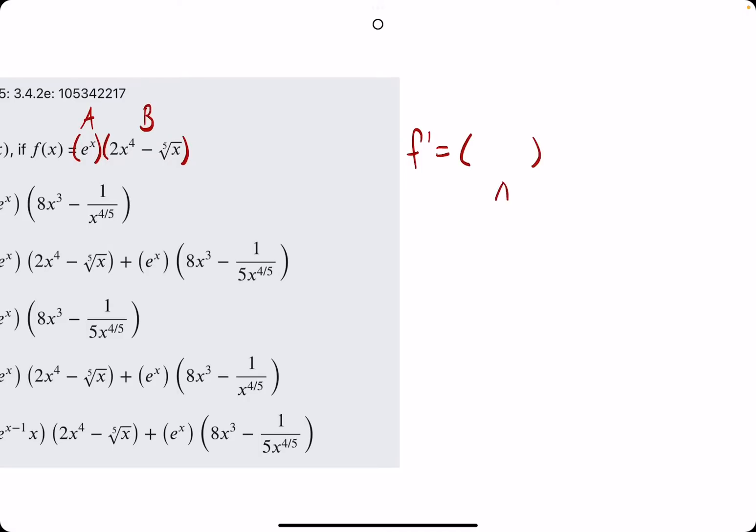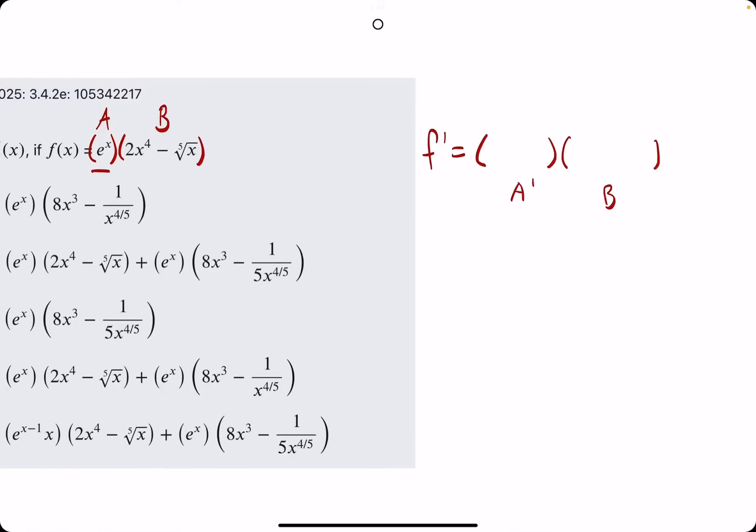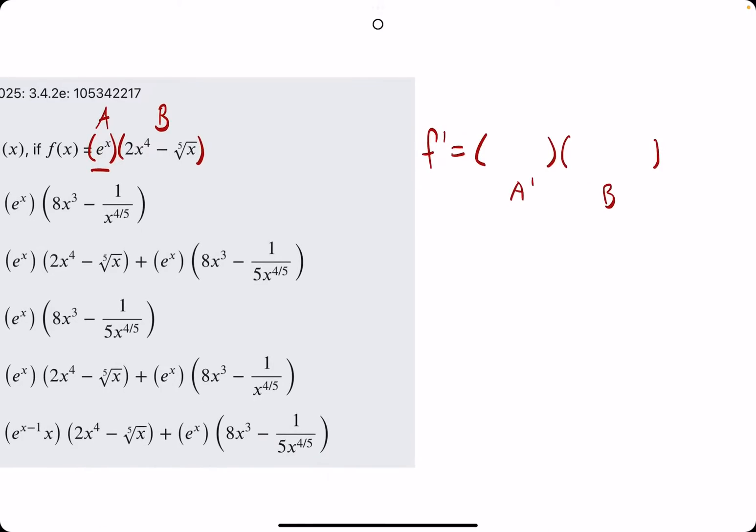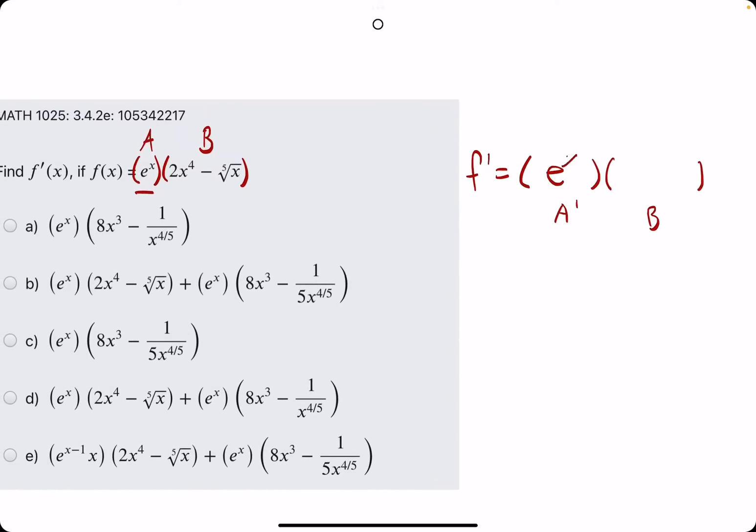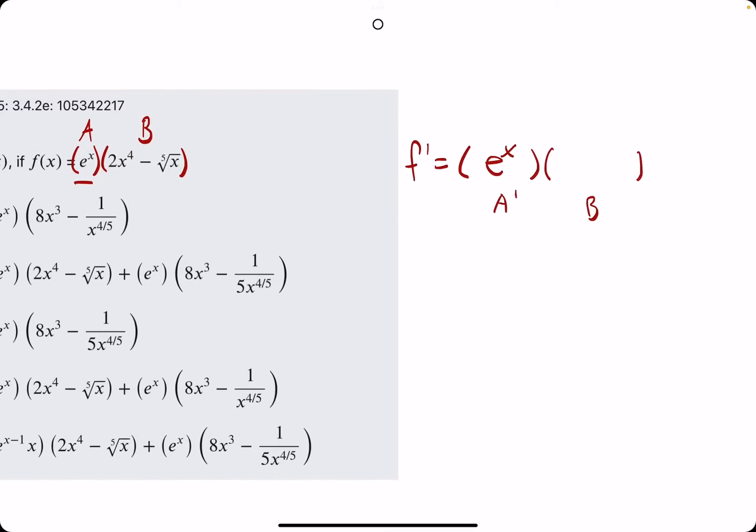So, jumping right into it, we always start with A prime times B. So, A prime is the derivative of A, or the derivative of e to the x, which is just e to the x. And then we have the original B right next to it. So, just like that, we are halfway done.